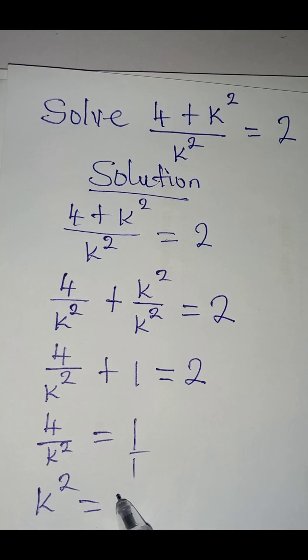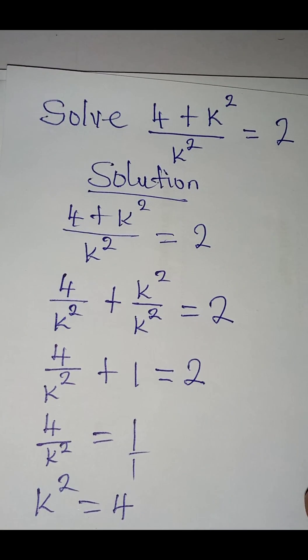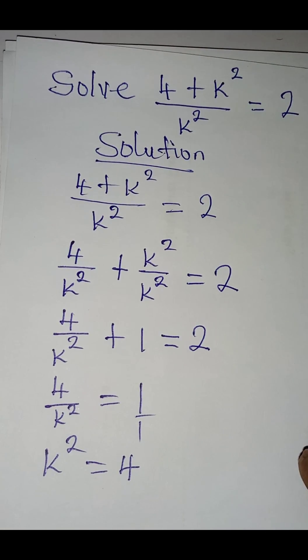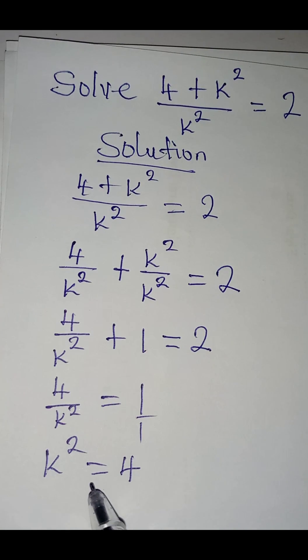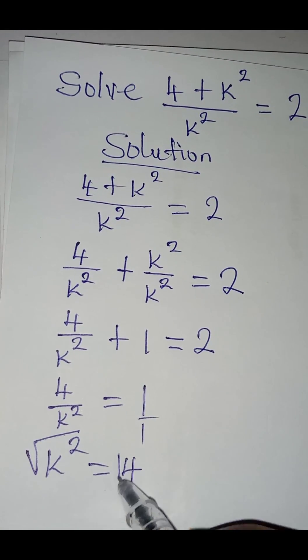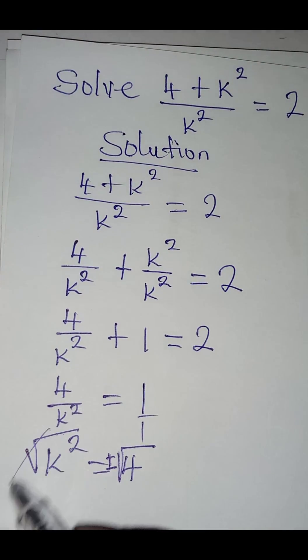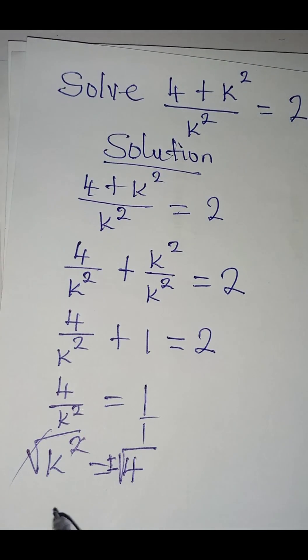Right, the next thing to be done is for me to take the square root of both sides. And when I do that, I'm going to have positive or negative value on the right hand side. Square and square root cancel each other.